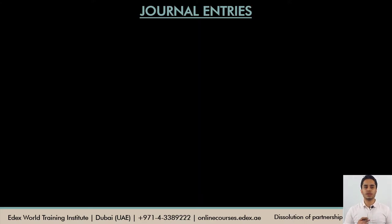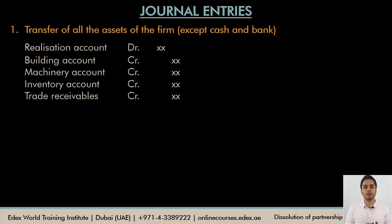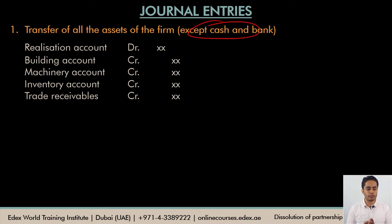Let's have a look at what journal entries will be passed at the time of dissolution of the firm. At the time of dissolution, the books of the firm have to be closed. To do that, we will have to close up all the assets and liabilities of the firm. Our first entry is to close all the assets of the firm and transfer the balances to the realization account — an account opened specifically to pass the entries at the time of dissolution. Transfer all the assets, but do not transfer the cash and bank account. All other current and non-current assets would be transferred at their book value.